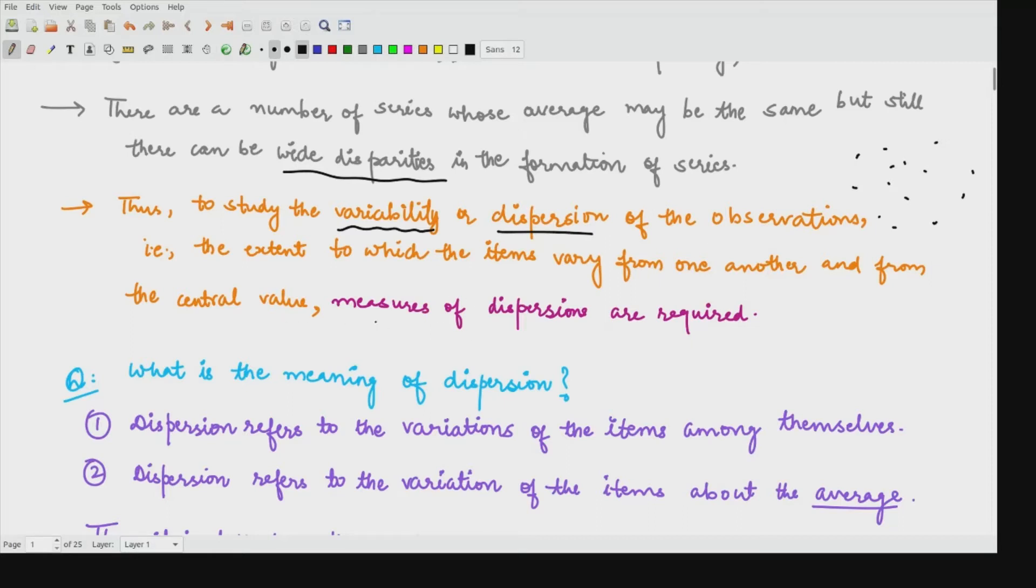Here, measures of dispersion are required because we wanted to study the extent to which the items vary from one another first thing. Moreover, how much they vary from the central value, say mean, median, or mode. That is the main thing that is required.